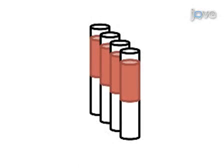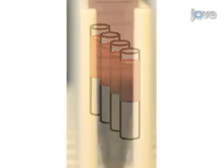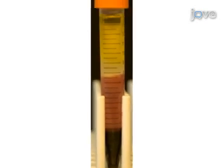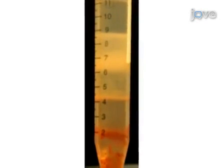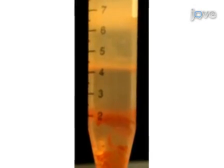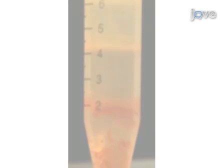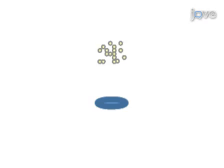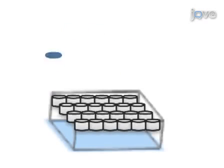In this video, granulocytes are isolated from human whole blood by histopaque density gradient centrifugation. Neutrophils are isolated from the granulocyte preparation by percol gradient centrifugation, seeded onto cover glass and stimulated to form NETs using chemical or biological stimuli.